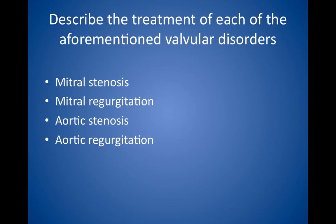Aortic valve replacement should be performed in essentially all patients with symptomatic aortic stenosis. Aortic valve replacement or repair is indicated in symptomatic patients with chronic aortic regurgitation. It may also be indicated for asymptomatic patients under certain circumstances, such as progressive left ventricular enlargement along with specific echocardiographic findings that are beyond the scope of the USMLE. Vasodilators may be used to reduce the hemodynamic burden and possibly delay the need for surgery in asymptomatic patients.